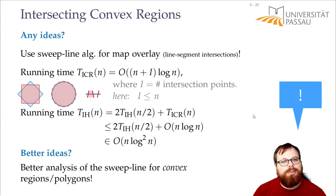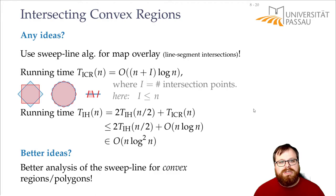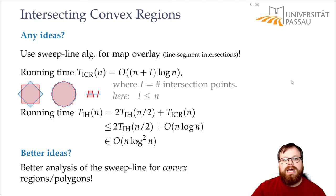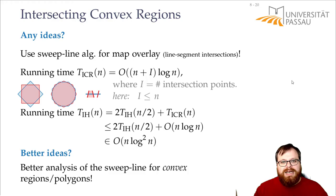The running time of the sweep line depends on the number of event points — here O(n) corners plus O(n) intersection points — and on how much time each step takes for the data structures, which is the log n factor. Now consider how many segments are on the sweep line at any time. Each convex region has a left hull and a right hull between its top and bottom point, and each hull is a y-monotone curve intersecting the sweep line at most once. So the sweep line status always contains at most four segments, and adding or removing takes O(log 4) = O(1) time.